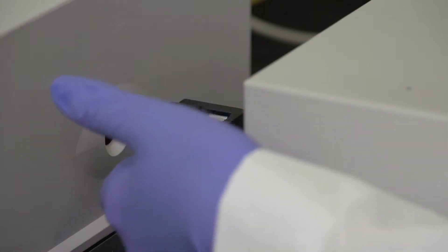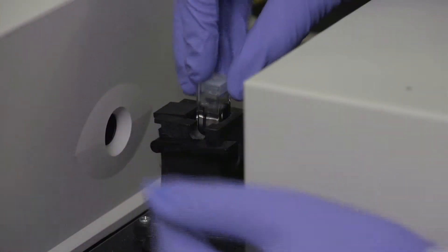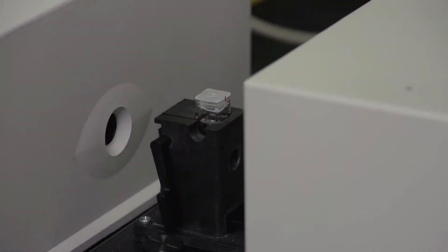Make sure that the arm is up before you place the cuvette into the sample compartment chamber, and then press the arm down to lock it in place.